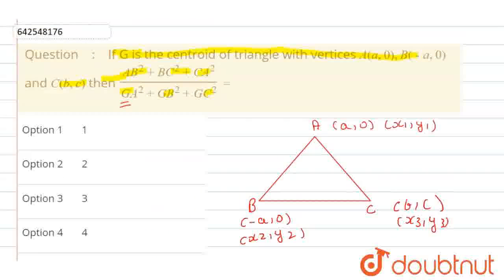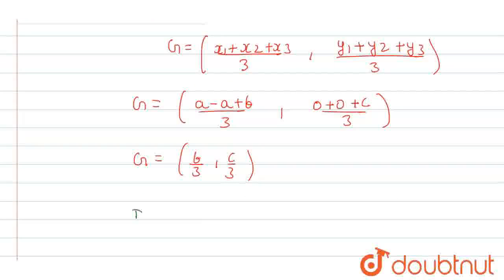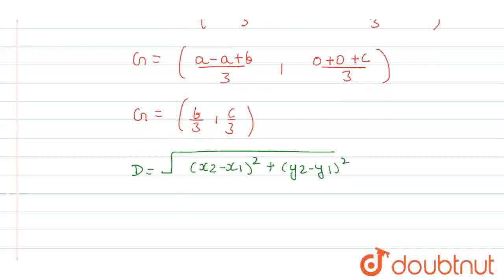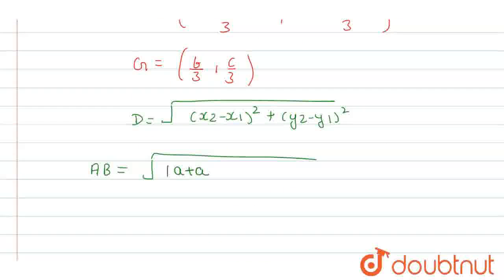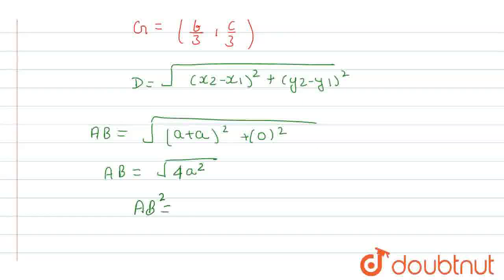Now, in the question, we need to find AB, BC, CA — the side lengths — and also GA, GB, GC — the distances from the centroid. First, we find the side lengths using the distance formula: D = √((X2 - X1)² + (Y2 - Y1)²). For AB, A is (a, 0) and B is (-a, 0), so AB = √((−a − a)² + 0²) = √(4a²). Therefore AB² = 4a².